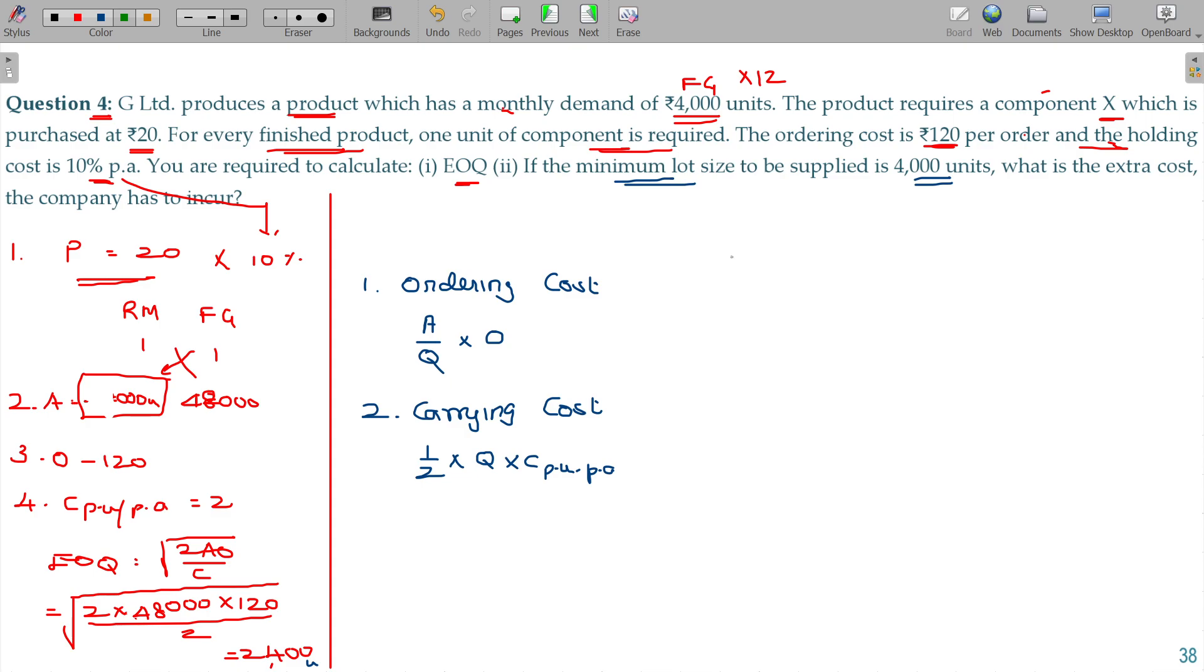So if I go for ordering 2400 units every time, what is the ordering cost? My annual requirement being 48,000 units, every time I order 2,400, that's 20 orders. Per order ordering cost 120, so 20 into 120 equals 2,400 rupees as the ordering cost.